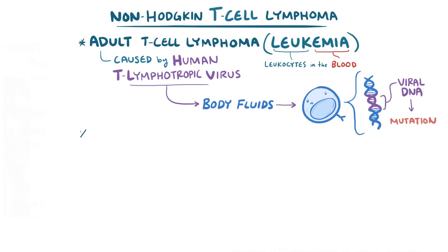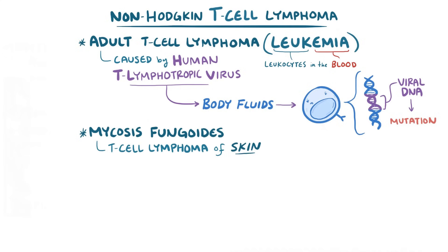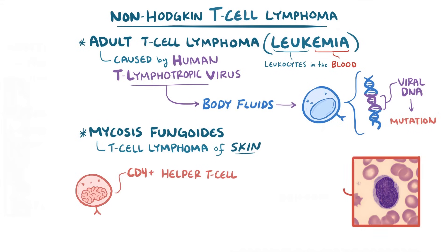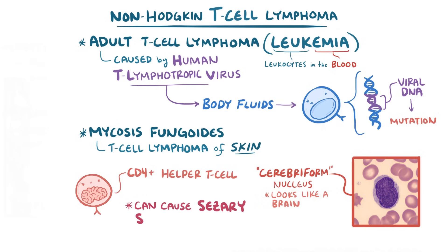The second T cell lymphoma is mycosis fungoides, a T cell lymphoma of the skin that causes patches resembling a fungal infection. The neoplastic cell is a CD4-positive helper T cell, which under a microscope has a distinctive cerebroform nucleus that looks like a brain. If these neoplastic CD4-positive helper T cells circulate in the blood, they can cause Sézary syndrome, characterized by a generalized red rash called erythroderma, or itchy skin.